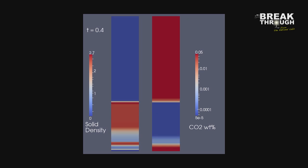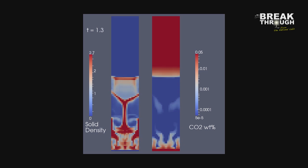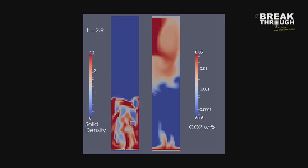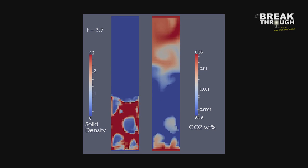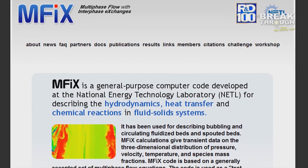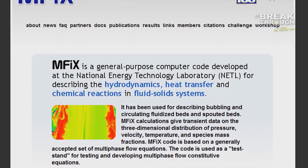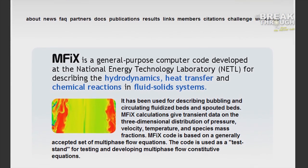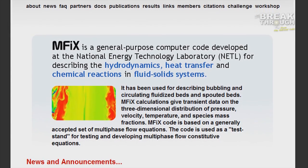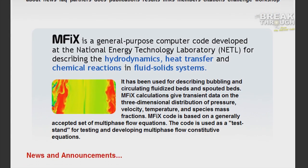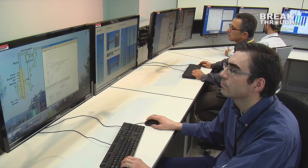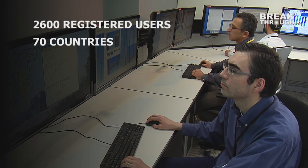Not only is this simpler and cheaper, but you end up with more detailed data, and it allows you to go beyond the reach of experiments alone. MFIX is an open source computer code. Researchers interested in simulating reacting flows can download the code from the internet for free. MFIX is so useful that more than 2,600 users from 70 countries have downloaded the software.